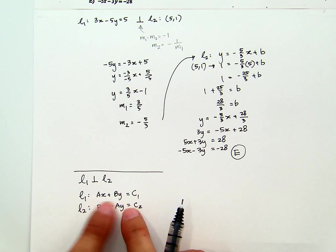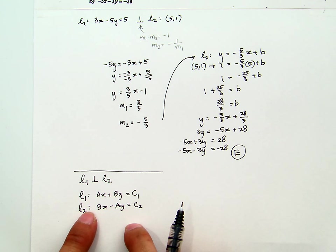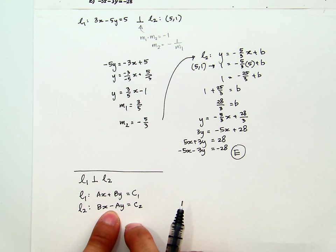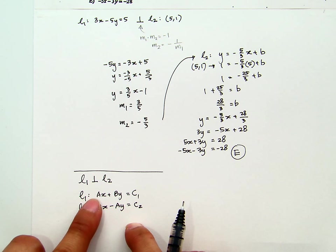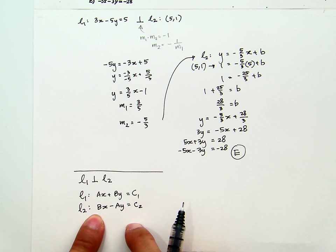You see, like, you're going to swap A and B, and let's say the A, you take the opposite. If you take the A opposite, don't do the B opposite. If you do the B opposite, don't do the A opposite. One of them, then you change the sign. Now, these two lines will be perpendicular.